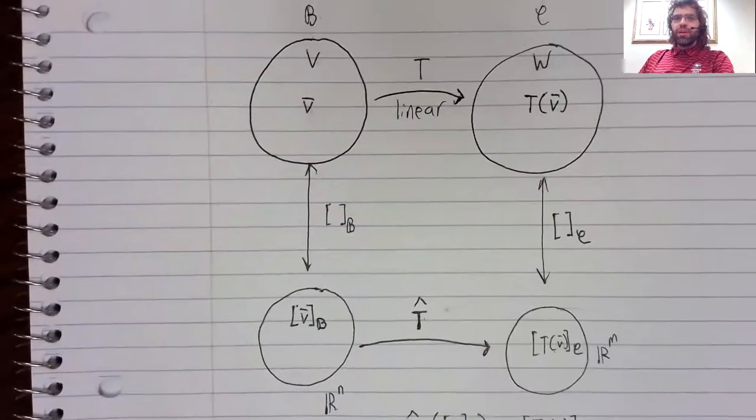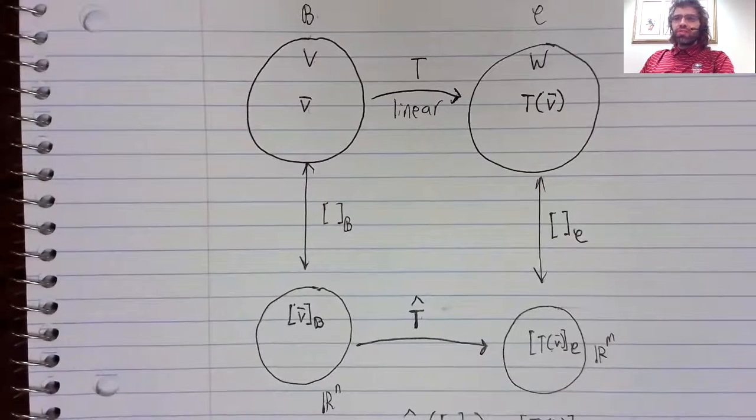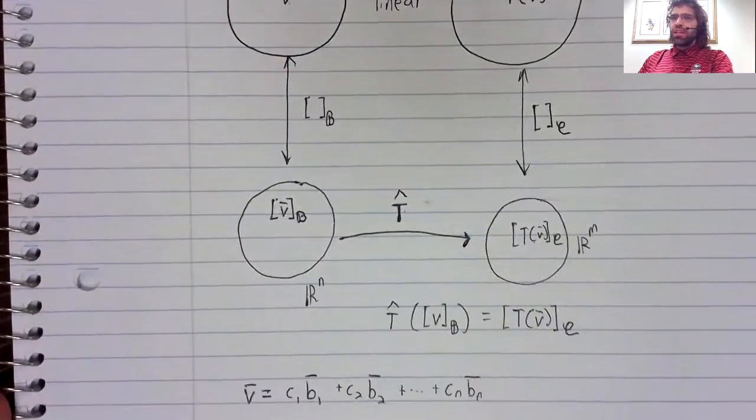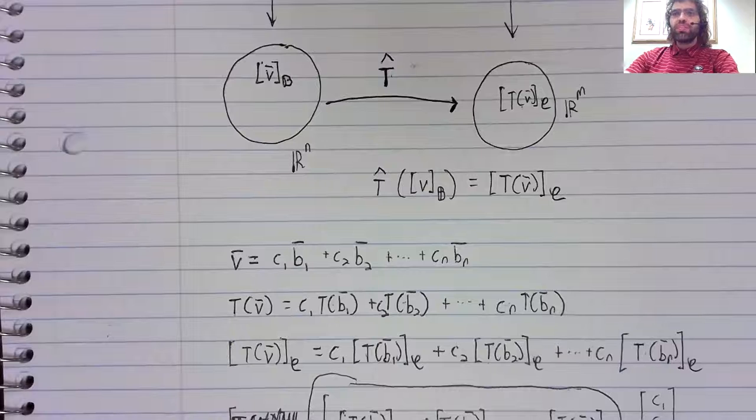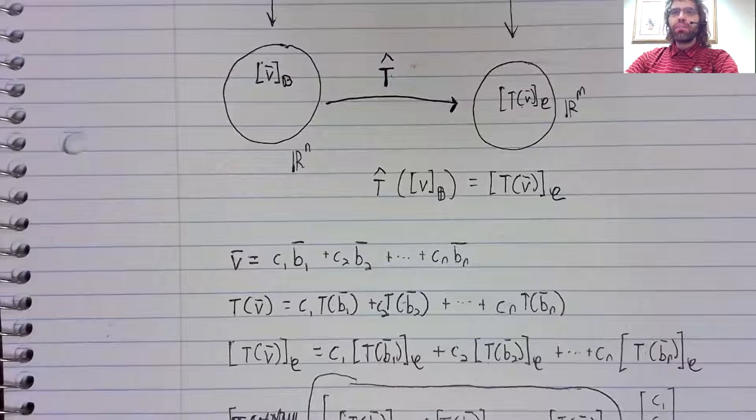In those previous videos, we looked at the situation where we have two vector spaces, V and W, and two bases, B and C. But all of this material would keep working if we had one vector space and one basis.